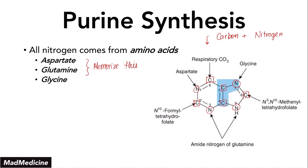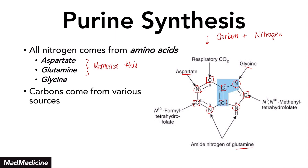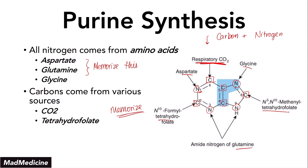If you want to be an overachiever, you can memorize that the first nitrogen comes from aspartate. But I feel like you hit a point of diminishing returns with that level of memorization, so I wouldn't personally memorize which nitrogen comes from glycine, glutamine, or aspartate specifically. Just remember aspartate, glutamine, glycine — in case you get asked which amino acids play a direct role in purine synthesis as it pertains to nitrogen. For carbon, the two main sources are carbon dioxide and tetrahydrofolate.